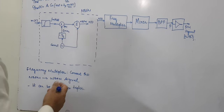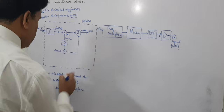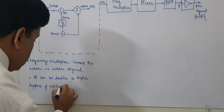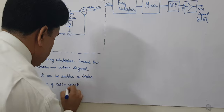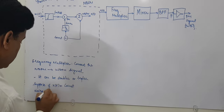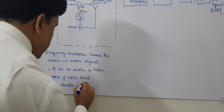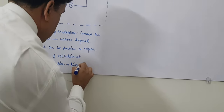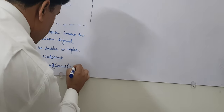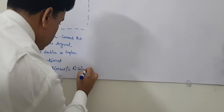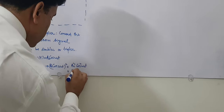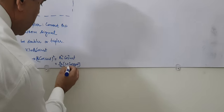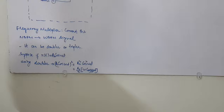Depending on the type of signal you want to generate — for example, suppose x(t) equals cos(omega_C * t) — using a doubler means multiplying it by itself: A_C times cos(omega_C * t), squared, which equals A_C over 2 times (1 plus cos(2 * omega_C * t)). This means you are making the frequency twice the original frequency.